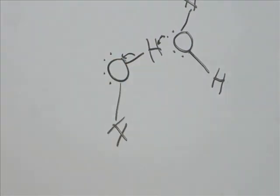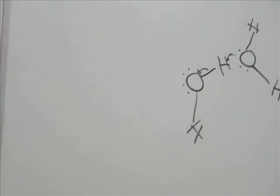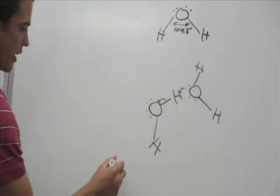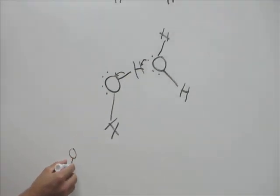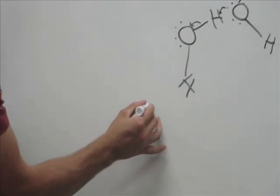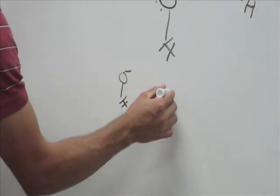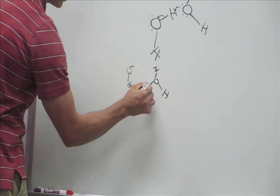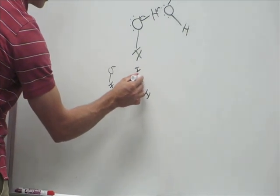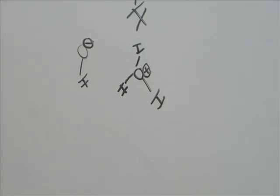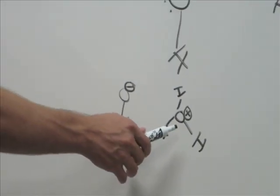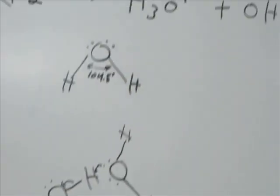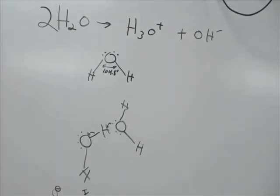So imagine this hydrogen moves over onto the neighboring molecule — the electrons stay on the oxygen. That would leave one molecule with a negative charge and another with a positive charge. And look — that's exactly hydronium (H₃O⁺) and hydroxide (OH⁻). This always happens in water.